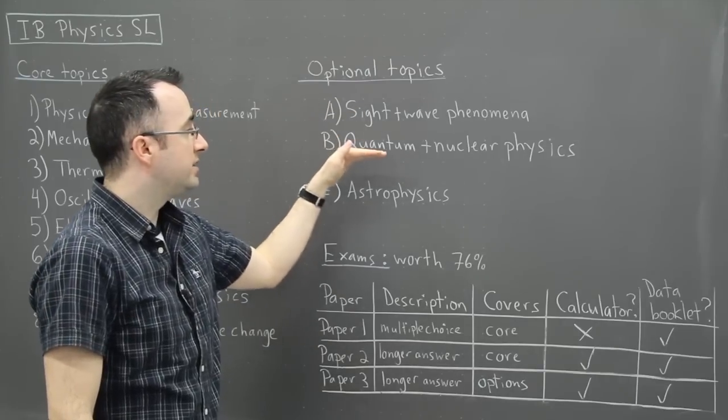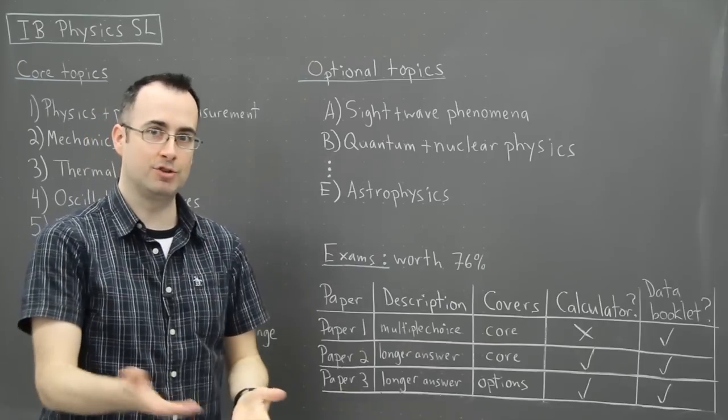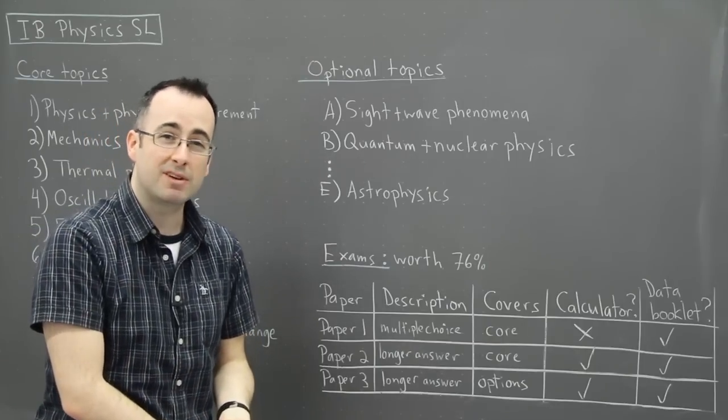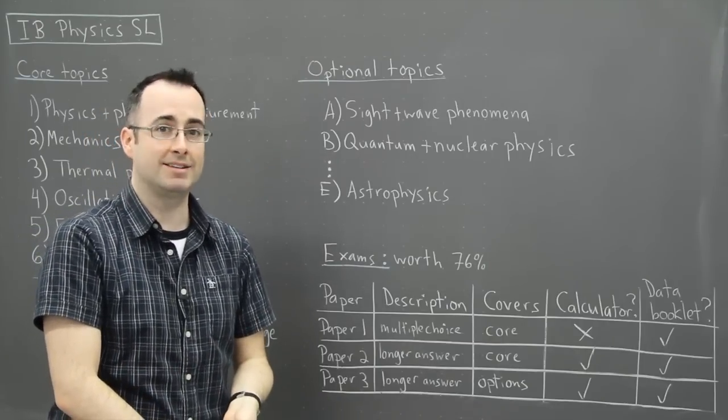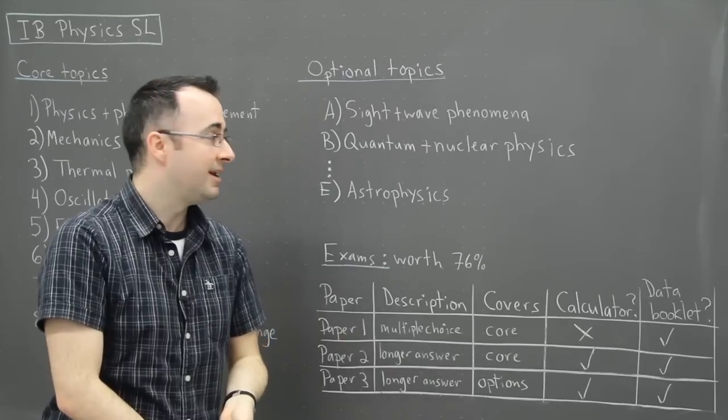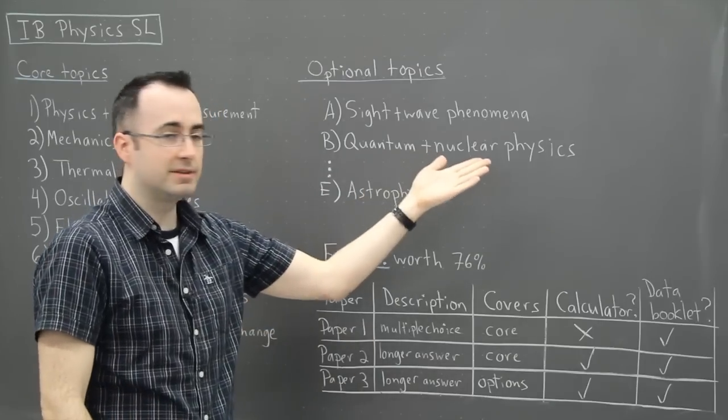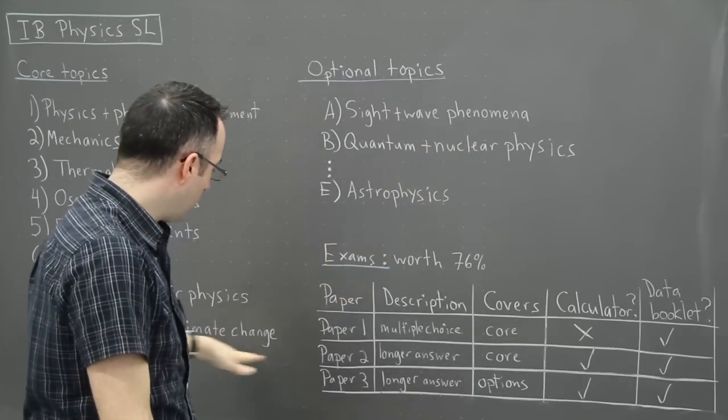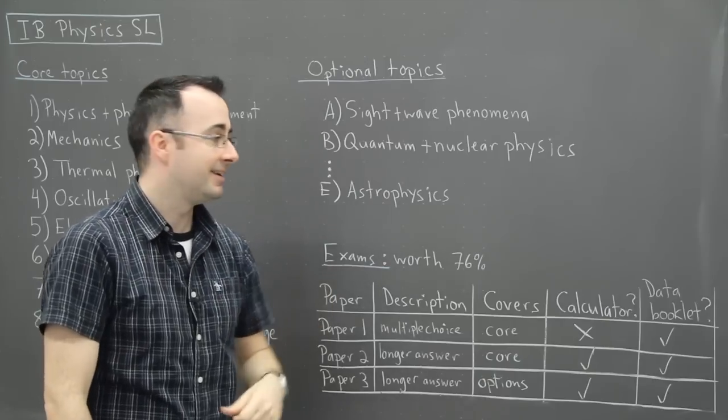With a quantum one, we talk about things like the wave particle duality and photoelectric effect. Some neat things like the Heisenberg's uncertainty principle. And we talk about nuclear physics as well. We expand a little bit on what we've done in topic seven in the core.